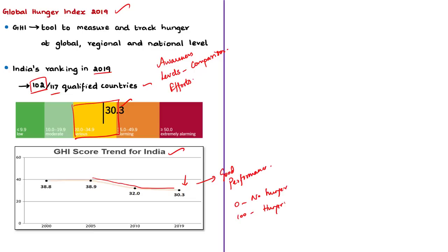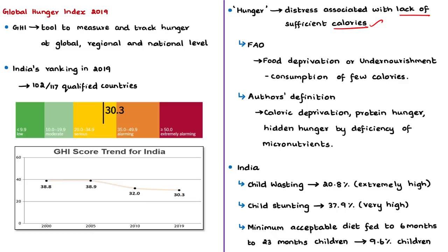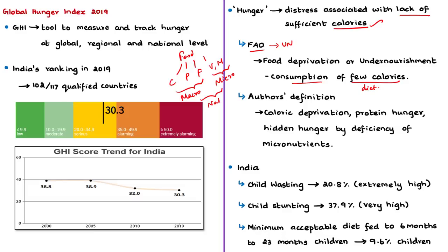We should know how the term hunger is defined. Hunger usually refers to distress associated with a lack of sufficient calories. The FAO of the United Nations defines food deprivation or undernourishment as the consumption of too few calories to provide the minimum dietary energy each individual requires for a healthy and productive life. The food we eat consists of macronutrients — carbohydrates, proteins, fats — and micronutrients like vitamins and minerals. Sufficient calories are important to come out of the menace of hunger and undernourishment. The author defines hunger as caloric deprivation, protein hunger, and hidden hunger by deficiency of micronutrients.